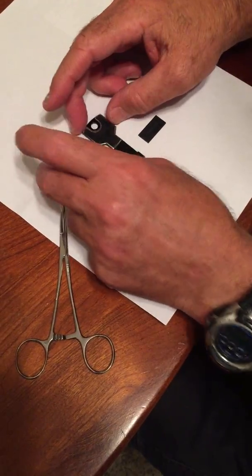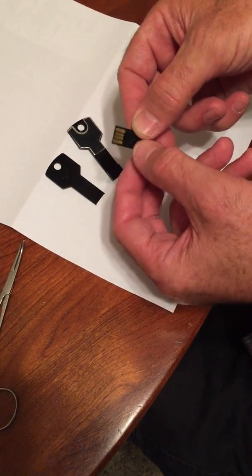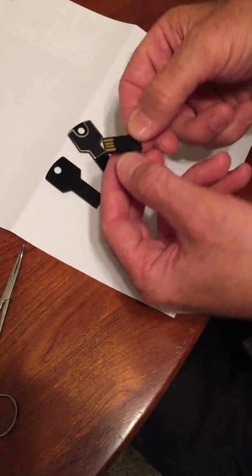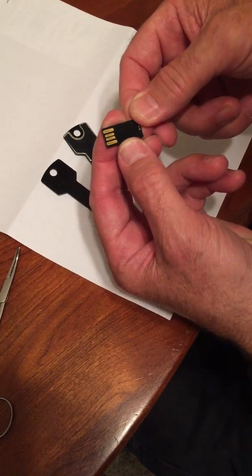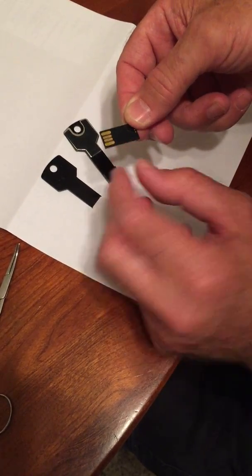This is the flash drive right here, the electronics. As you can see, there's a mirror of a circuit board on there because it's been glued together.